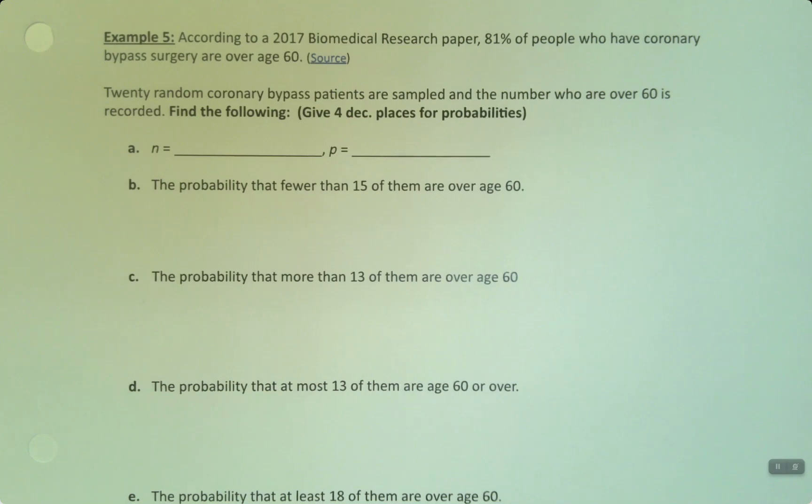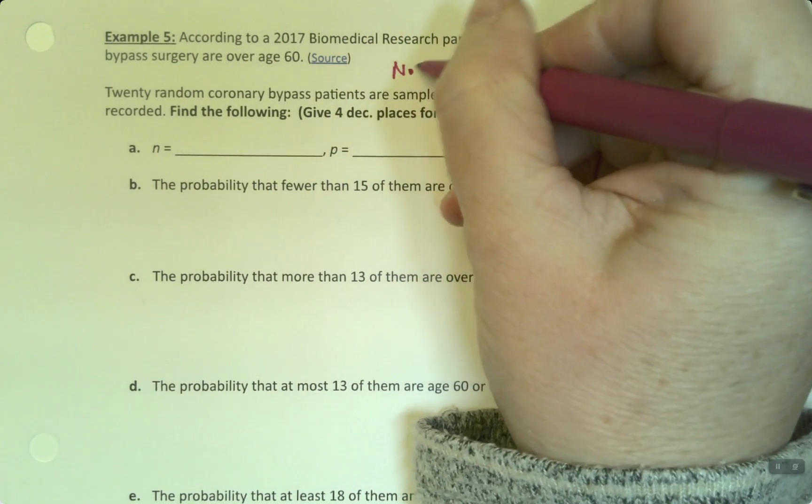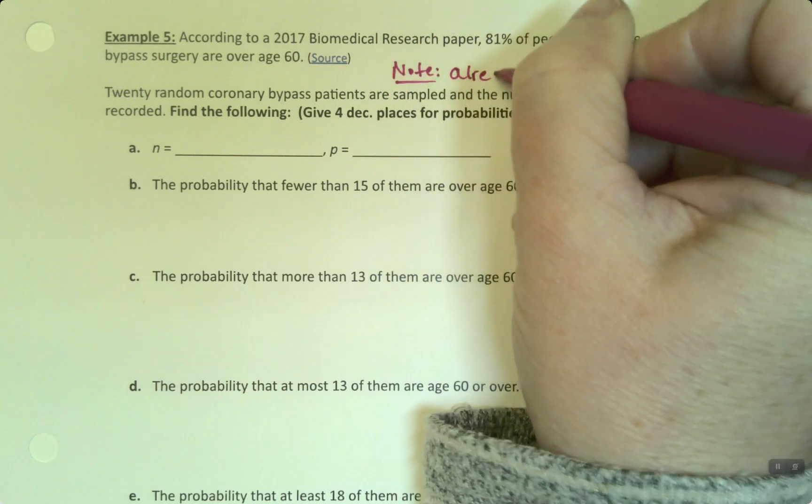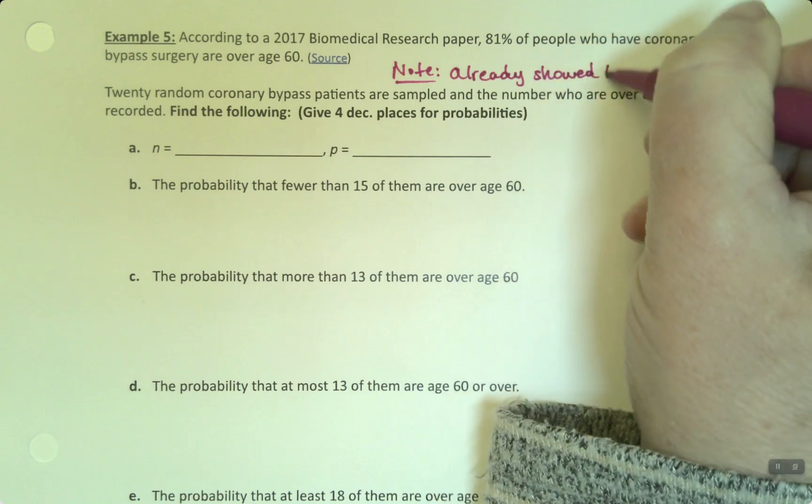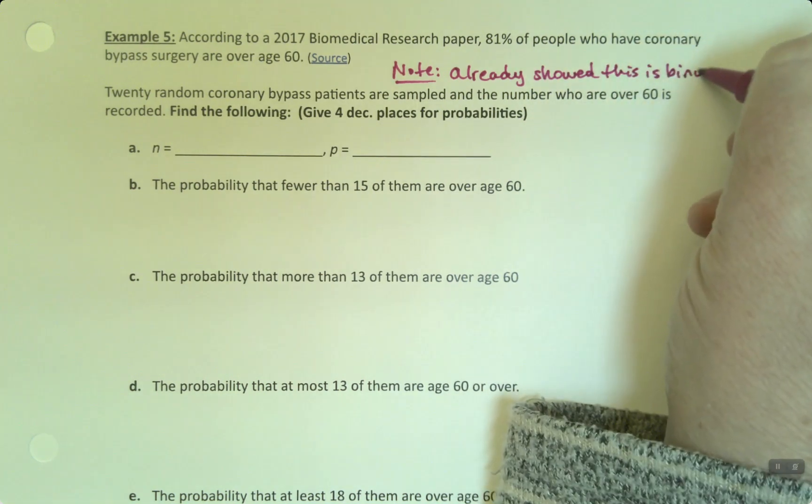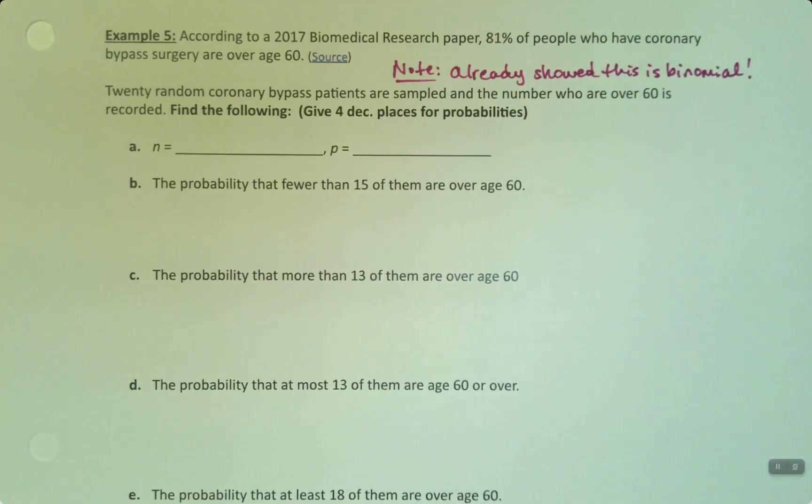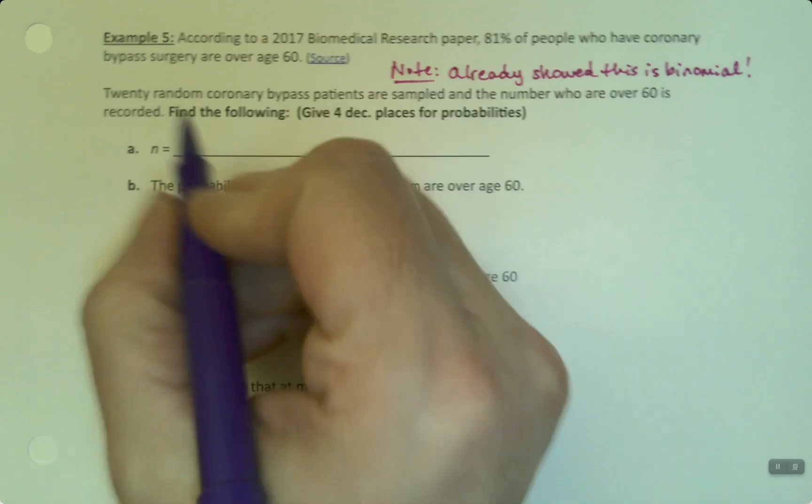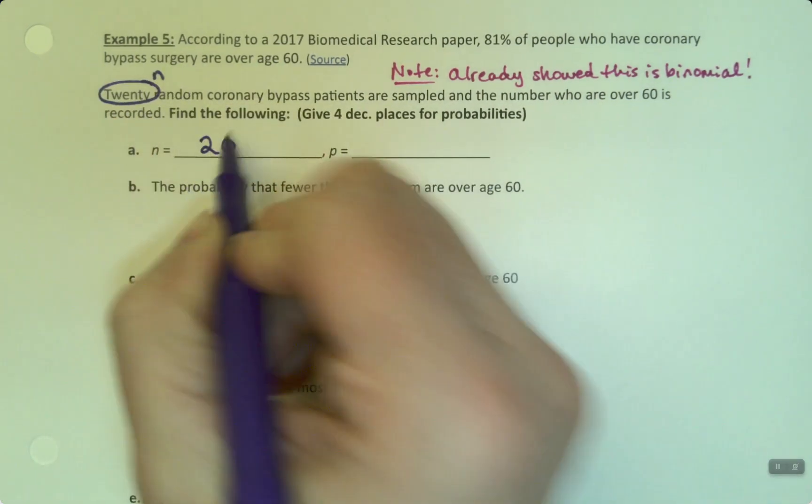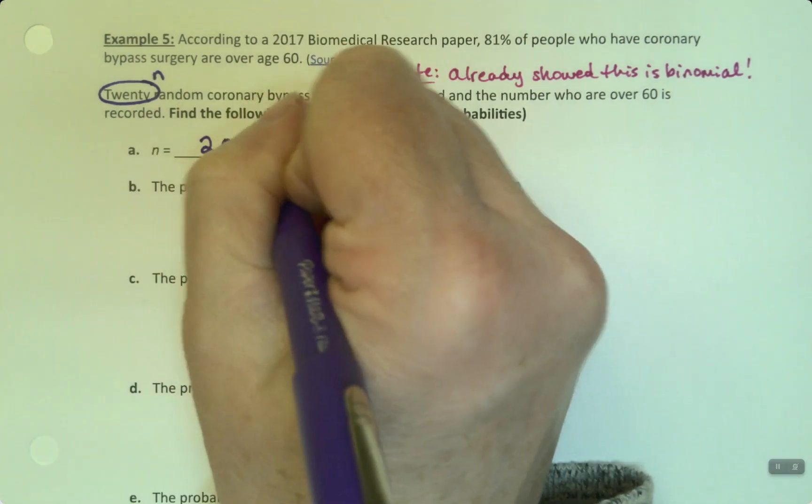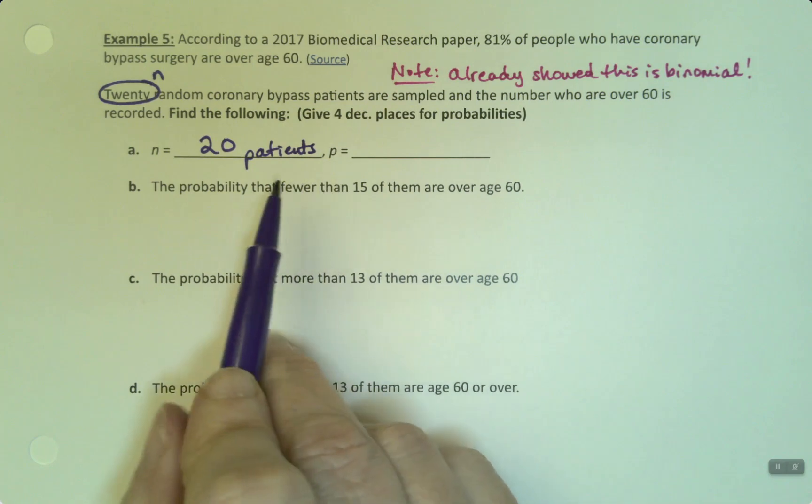Alright, so according to a 2017 biomedical research paper, 81% of people who have coronary bypass surgery are over age 60. We've seen this problem before. We already proved this was binomial, so we can just make a note. We already showed this was a binomial experiment a few pages ago in the notes. Alright, so 20 random coronary bypass patients are sampled and the number who are over 60 is recorded. Find the following. We already found this value. N is right here, that's N. It's 20, right? They're 20 patients.